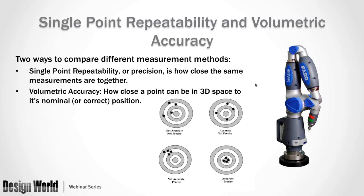Let's talk about single-point repeatability and volumetric accuracy. When you're looking to buy an articulated arm coordinate measuring machine, they're going to be specced using these two different numbers, and you might be wondering what's the difference. This boils down to the difference between precision and accuracy. Simply stated, single-point repeatability or precision is how close the same measurements are together, while volumetric accuracy is how close a point can be in 3D to the correct position. These two are somewhat independent.